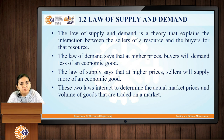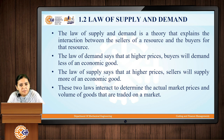The law of demand says that whenever the prices of products are higher, buyers will demand less of an economic good. But on the same hand, when the prices are higher, the law of supply says that the sellers will try to supply more of an economic good. These two laws interact to determine the actual market prices and the volume of goods that are traded on a market.